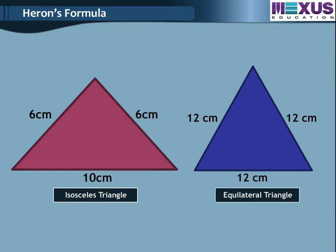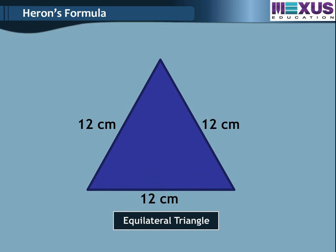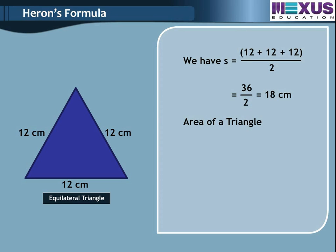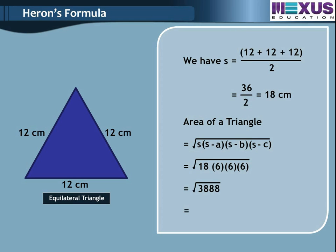Now, let us use Heron's formula on our earlier examples: the equilateral triangle with side 12 cm and the isosceles triangle with equal sides 6 cm and unequal side 10 cm. For the equilateral triangle, S equals (12 plus 12 plus 12) divided by 2, giving 18 cm. Calculating the area using the formula, we get square root of 18 into (6 cubed), which equals 36 root 3 cm square.